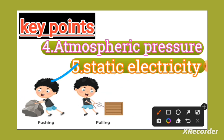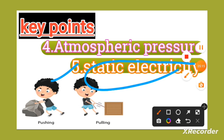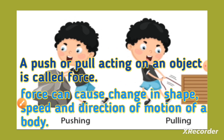Static electricity means the accumulation of charge on an insulated body — accumulation of charge is known as static electricity. For example, when you comb your hair and then bring the comb near your hair, the hair starts attracting towards the comb. This happens because some charges are produced in the comb by rubbing. This type of charge is known as static electricity.